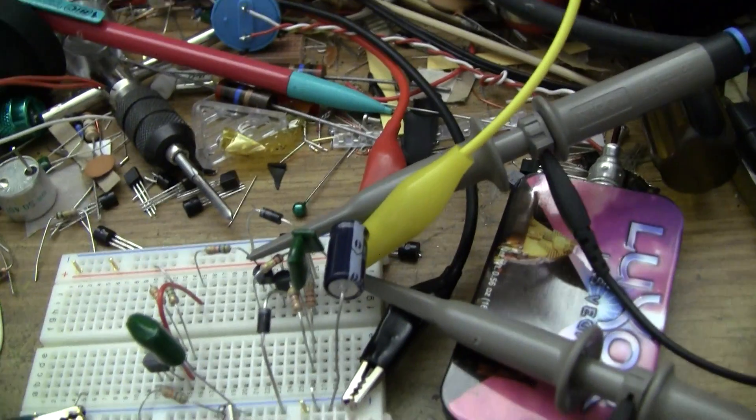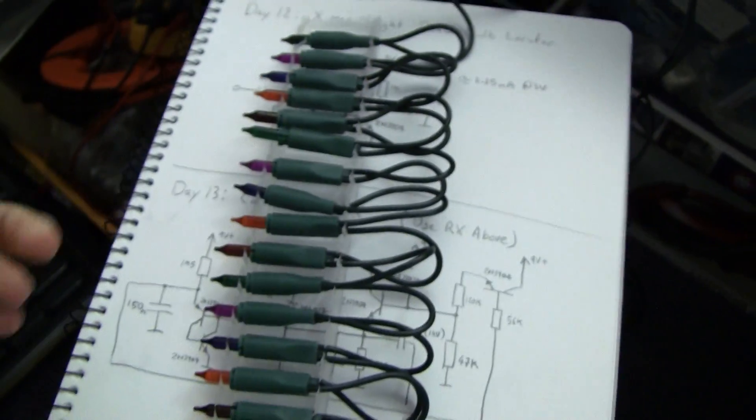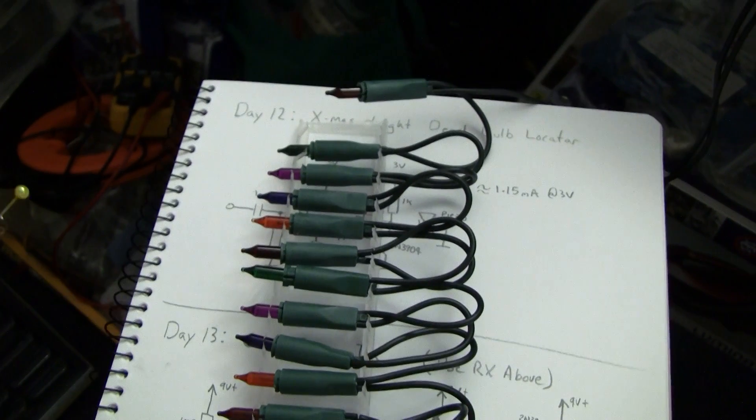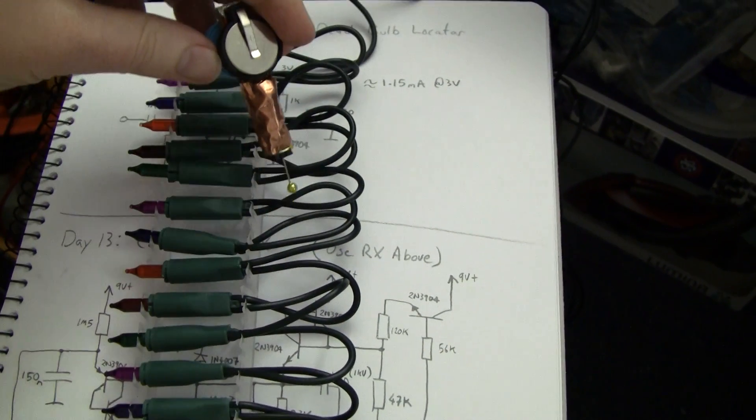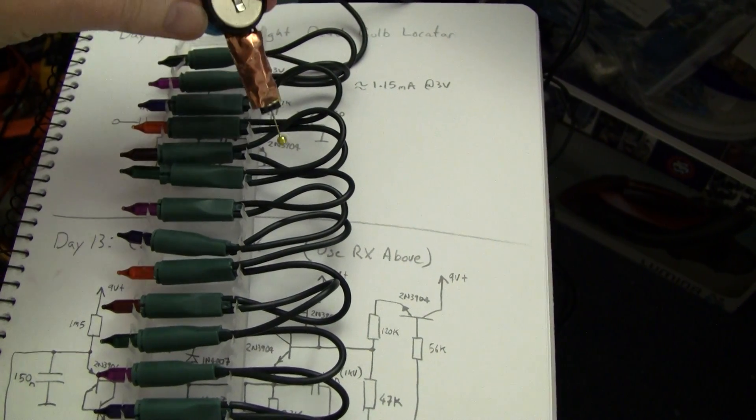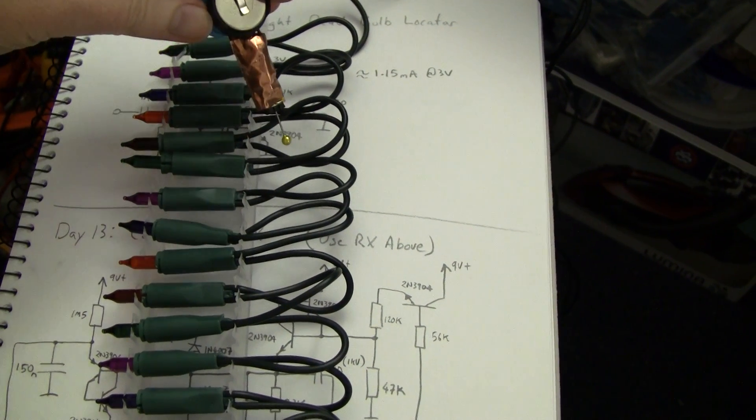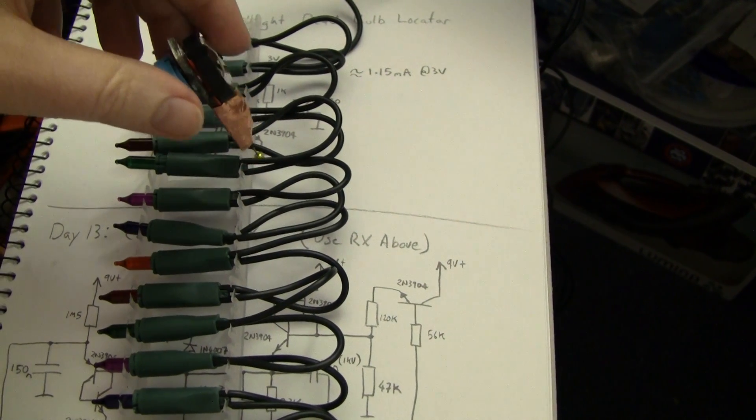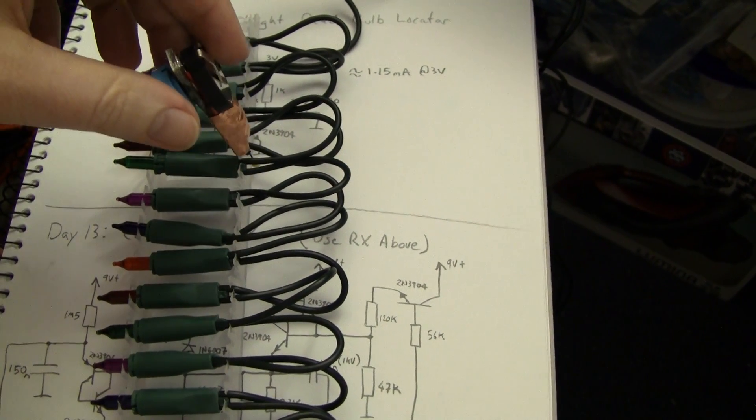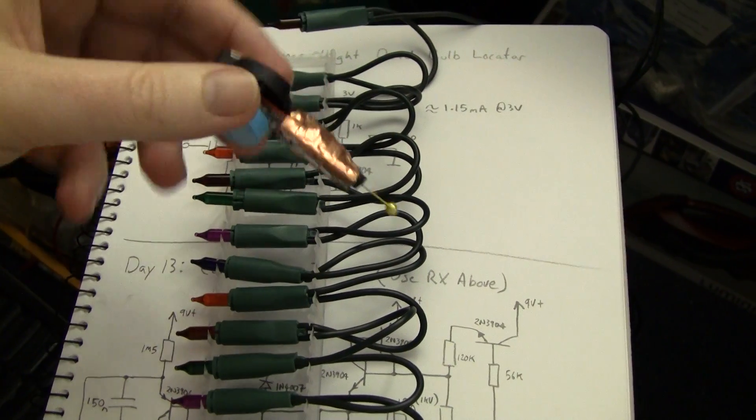Christmas light-wise, it's even better than using the hum. Here's the Christmas lights we have with the same defective bulbs. Now, pretty obvious where the break is. You can see it's pretty much ideal for the job.